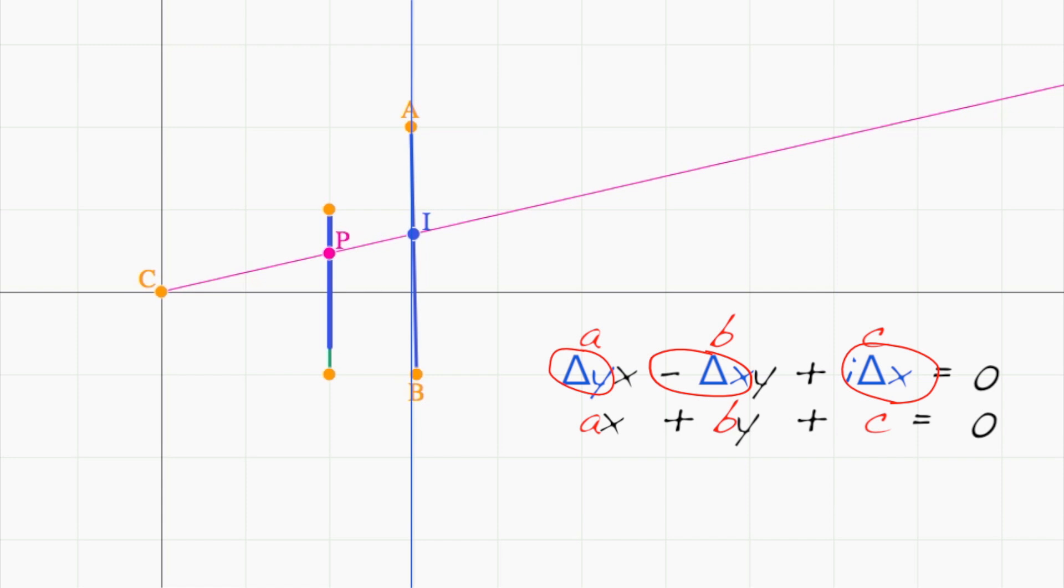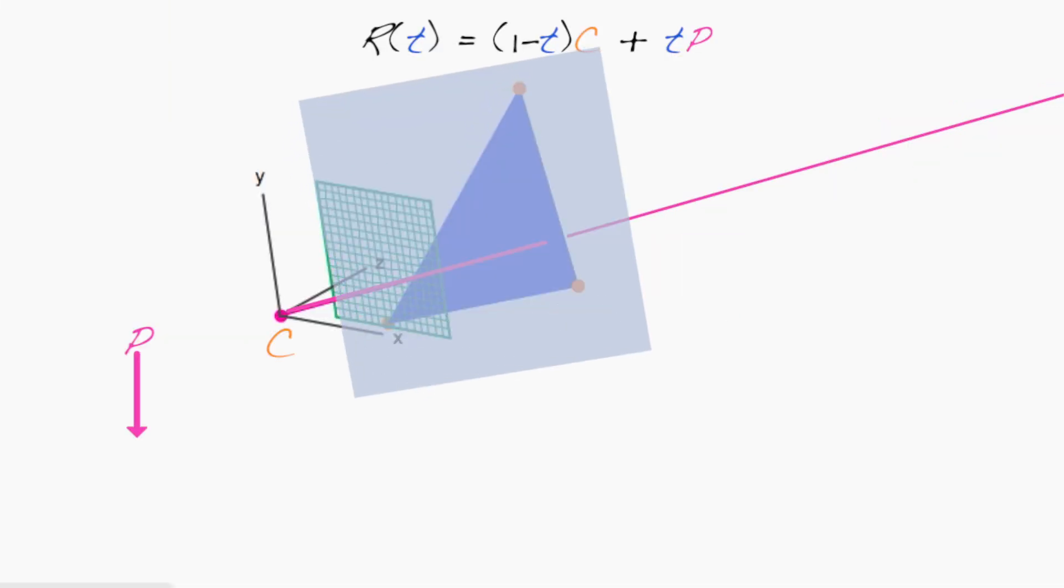Very similar to this is the equation for a plane. And every triangle lies in a plane. The equation for a plane can be written in implicit form as ax + by + cz + d = 0.